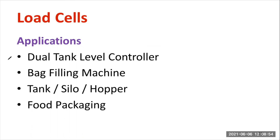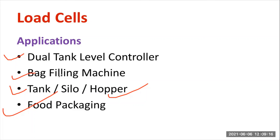The major applications are heavy load applications: dual tank level controller, backfilling machines, lathe machines, weight counting, tanks, hoppers, and food packing — such as packing of rice and food grains. These are the various applications. With the help of a load cell, we can calculate weights more than a thousand times over and minimize those challenges.